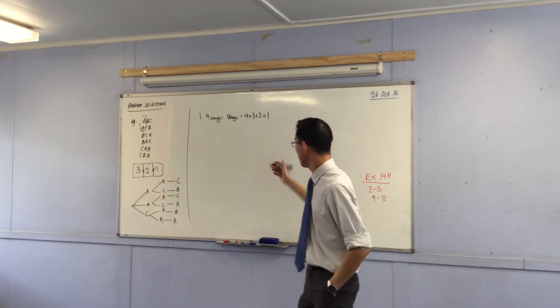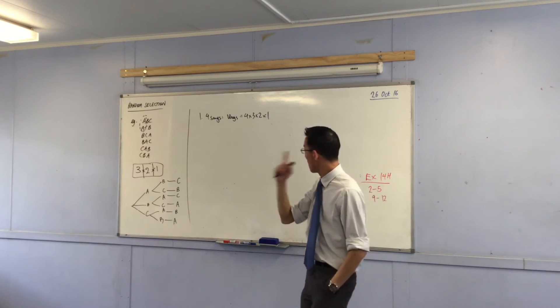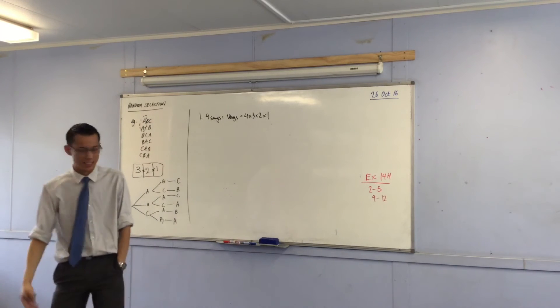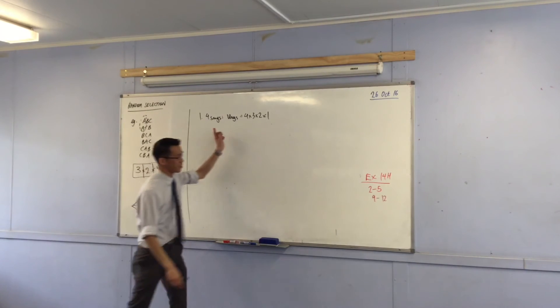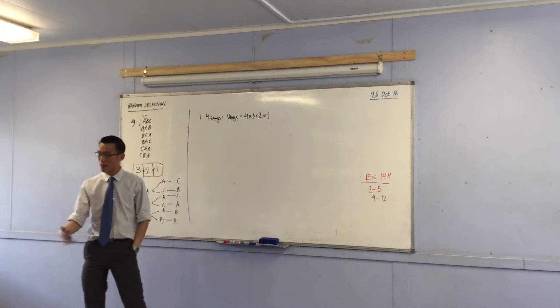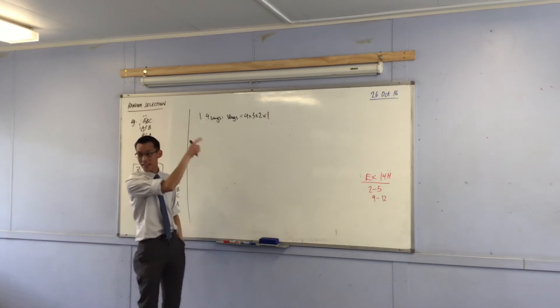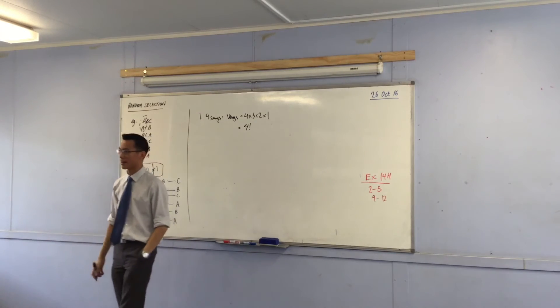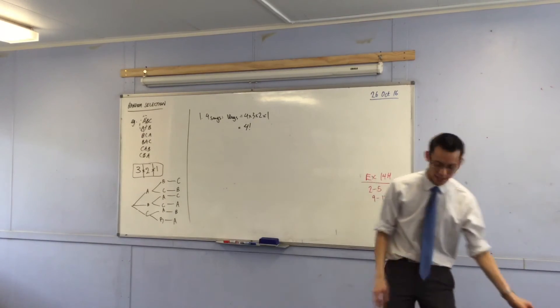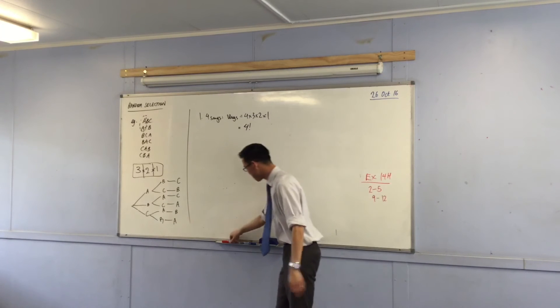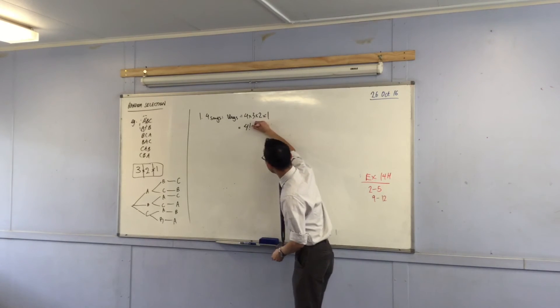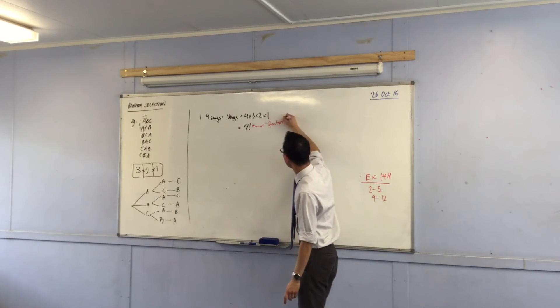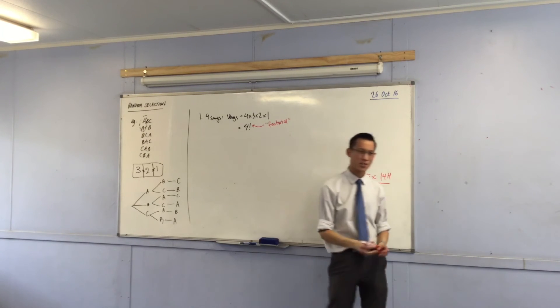So the ways equals four times three times two times one. Now, for a number like three or four, you can write that out. It doesn't take you very long. But later on, you're going to have to do questions where it says like, how about if you have 30 songs in your playlist? And you don't want to stand there writing 30 times 29 times, et cetera. So mathematicians made up a little piece of notation that does this. We call it the factorial. So, I don't know how many of you have seen on your calculator, you've got an exclamation mark. And the name of the symbol of the operation is the factorial. Yeah, you just unlocked a new power.